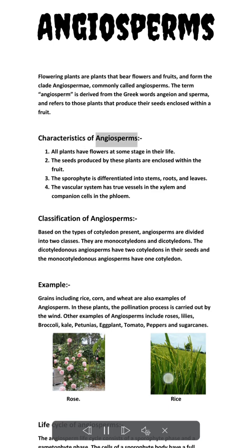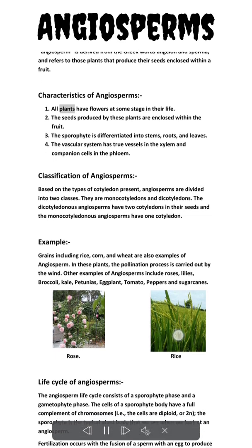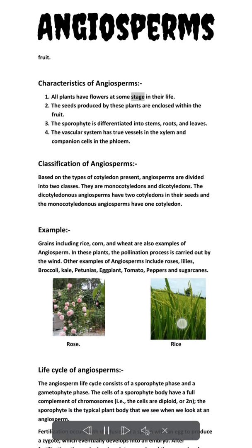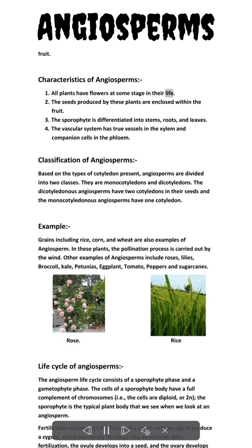Characteristics of angiosperms. All plants have flowers at some stage in their life. The seeds produced by these plants are enclosed within the fruit. The sporophyte is differentiated into stems, roots, and leaves. The vascular system has true vessels in the xylem and companion cells in the phloem.